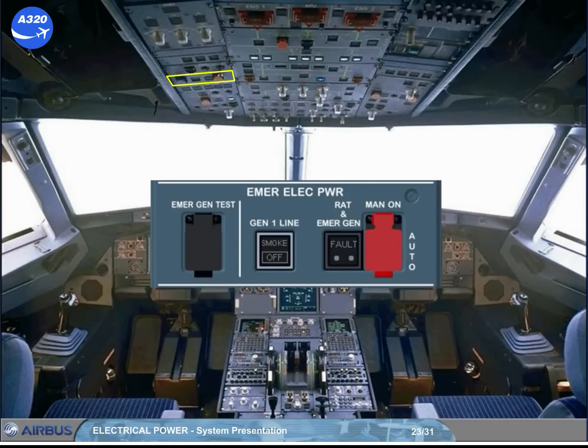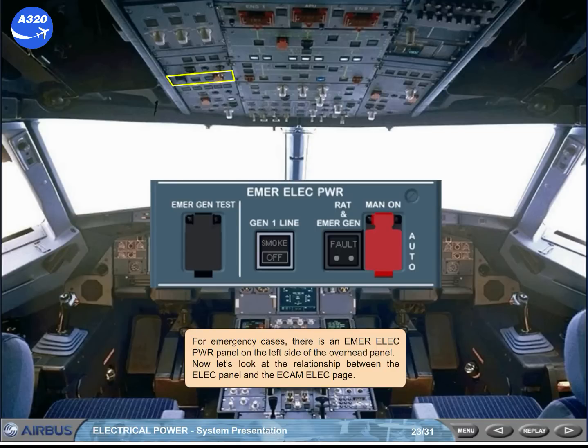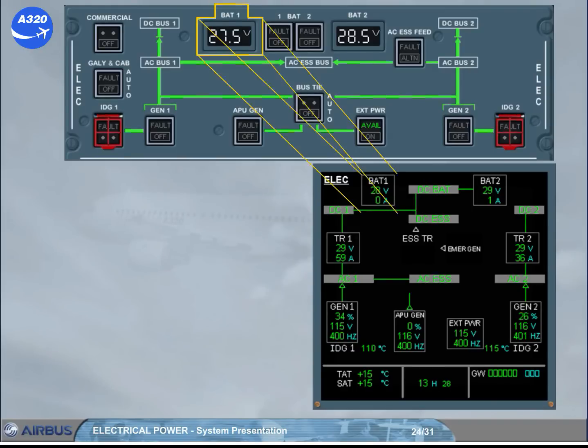Now let's look at the relationship between the electrical panel and the ECAM electrical page. The battery voltage can be monitored either on the overhead panel or on the ECAM page.